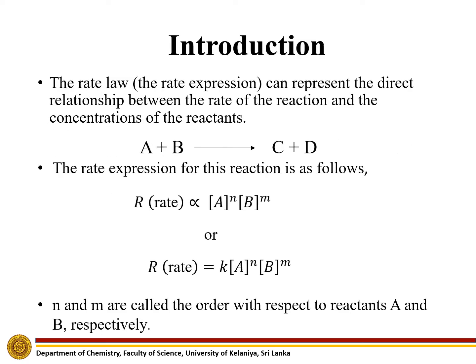The rate law or rate expression can represent the direct relationship between the rate of the reaction and the concentrations of the reactants. For example, consider the reaction between A and B. The rate expression can be written as: Rate is directly proportional to [A]^n × [B]^m, or Rate = k[A]^n[B]^m. N and M are called the order with respect to reactants A and B respectively.